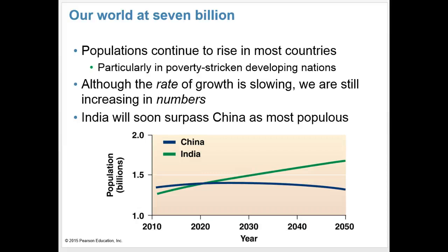Like India, many of the world's poorer nations continue to experience substantial population growth, and those nations are often not able to handle such growth, leading to stresses on society, the environment, and the people's health and well-being. In our world of more than 7 billion people, one of our greatest challenges is finding ways to slow population growth — probably not by such coercive methods as China did, but finding ways to establish conditions that lead people to desire to have fewer children.